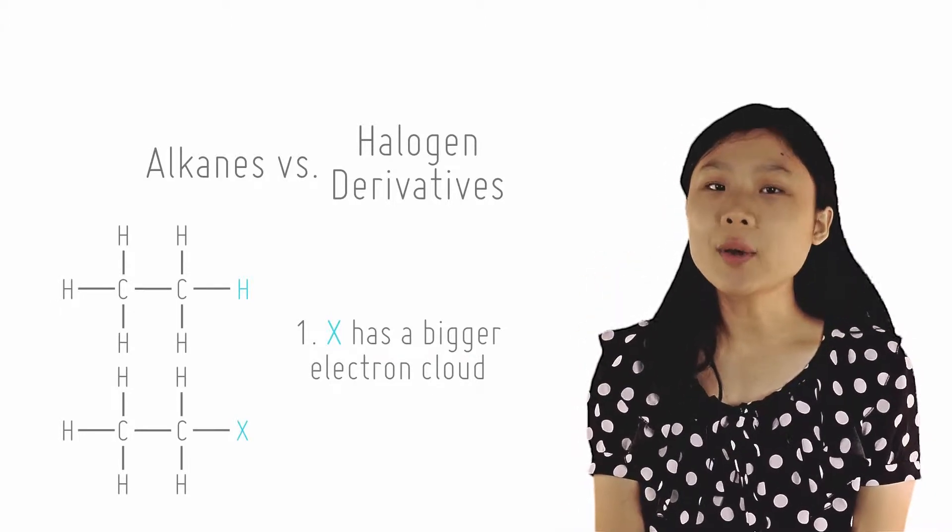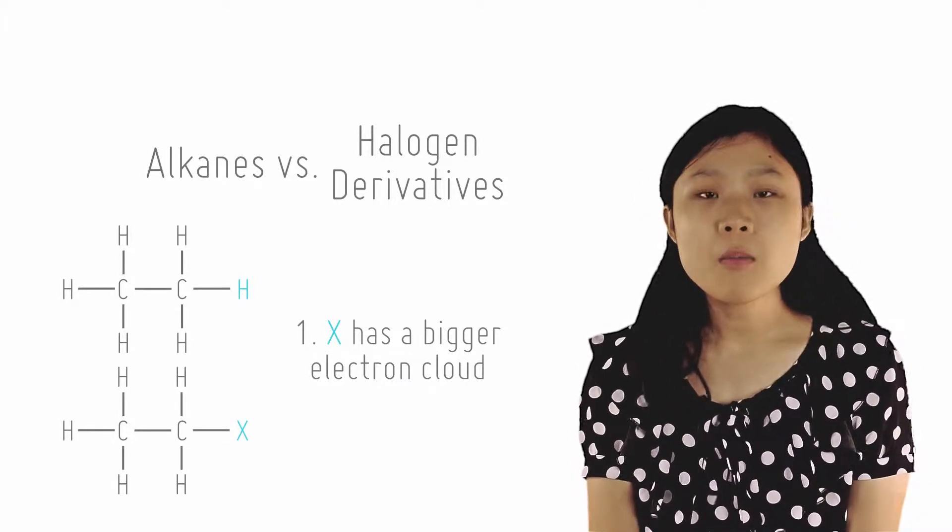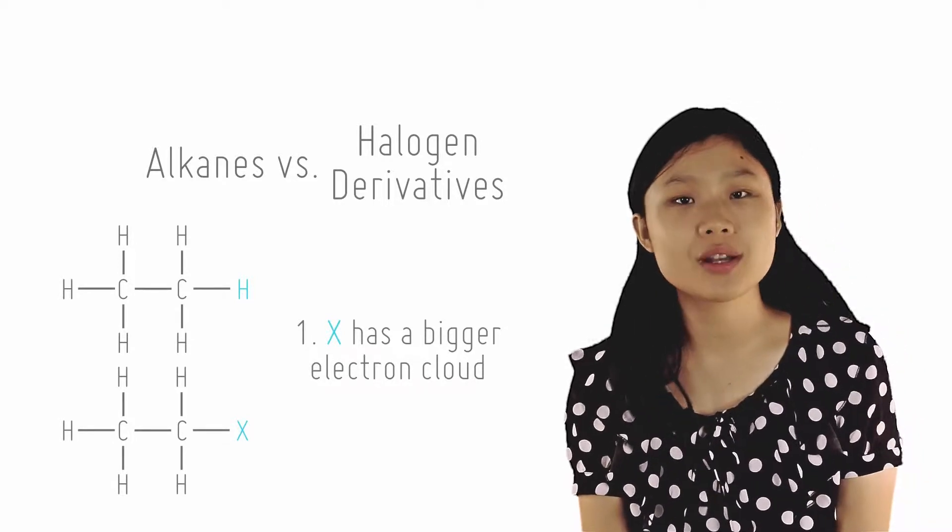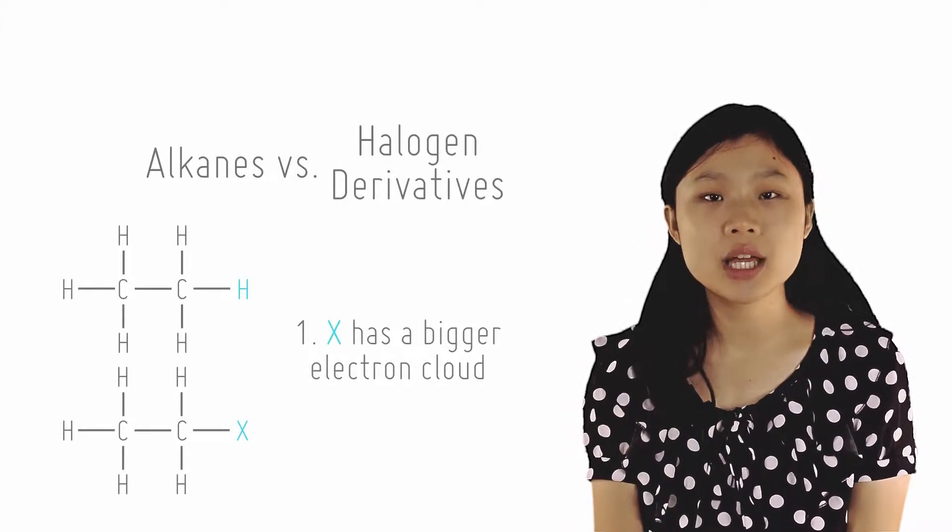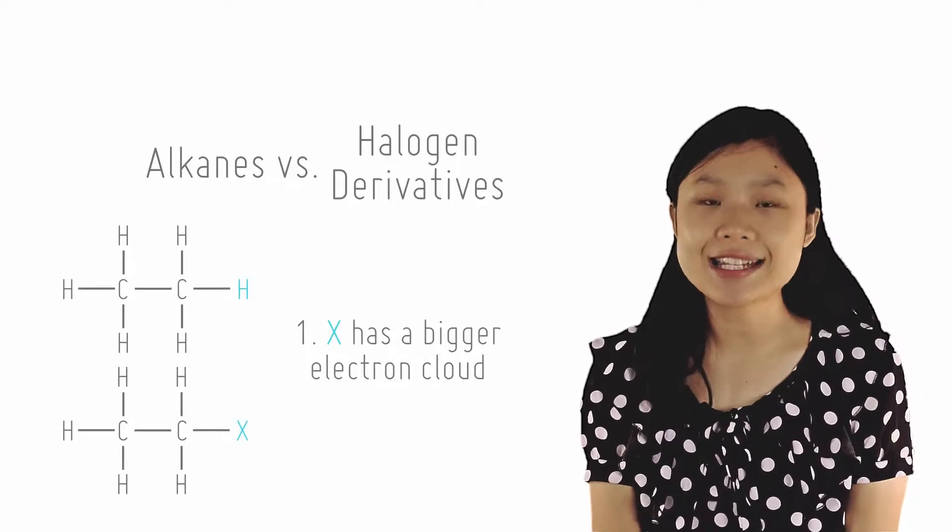Firstly, alkanes and halogen alkanes both experience ID-ID interactions. But the halogen alkane has a larger electron cloud that can be distorted more easily due to the larger halogen atom and thus experiences a stronger ID-ID force.